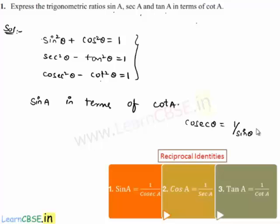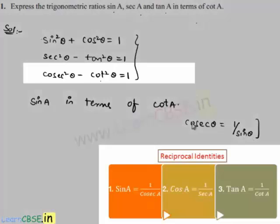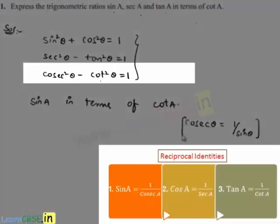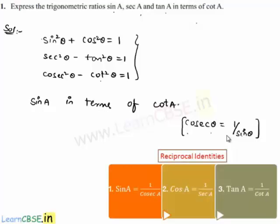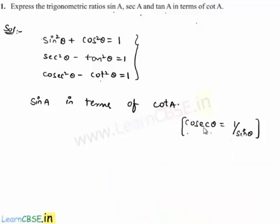So instead of theta here we have a. Let us apply the third identity. By applying those two formulas — the third identity and cosecant theta equals 1 by sine theta — let us obtain sine a in terms of cot a.